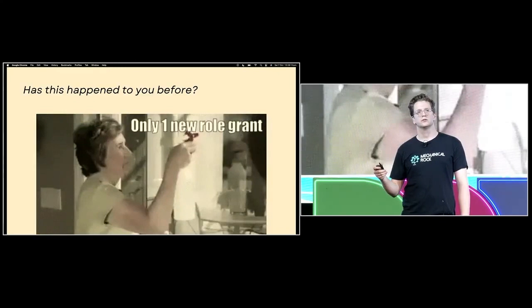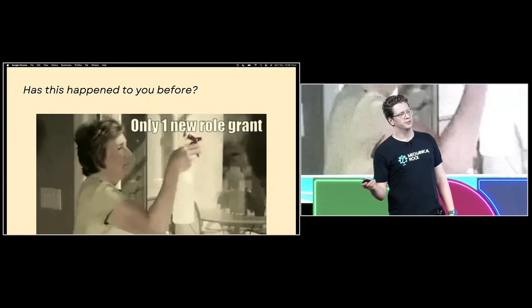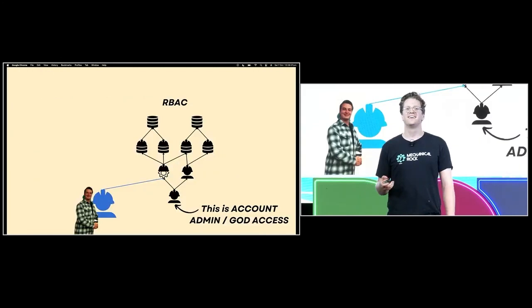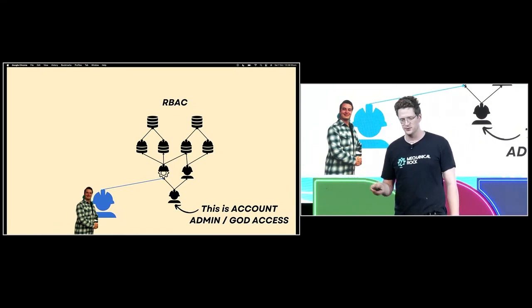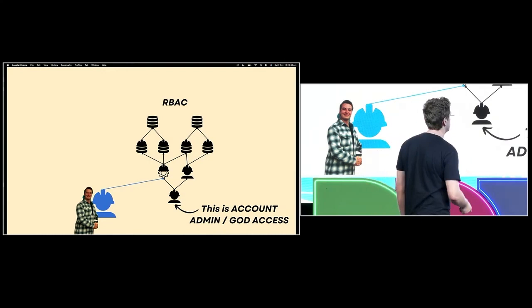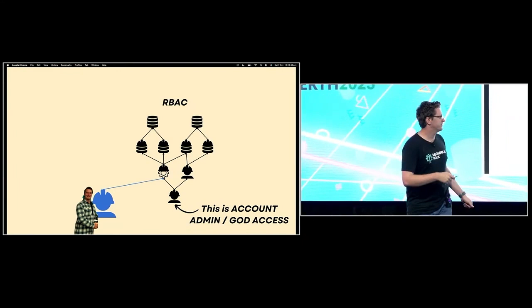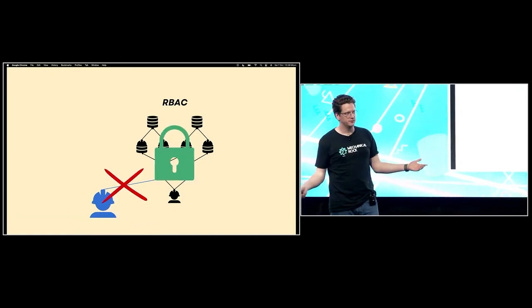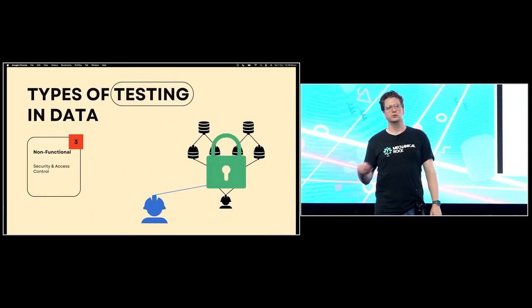Now non-functional testing. Has this ever happened to you? You make one change to your RBAC or your infrastructure, and people start losing access to reports — they can't assume roles. There's another use case: say you've got a malicious bad actor trying to grant himself elevated privileges in your data platform or RBAC through a PR, and he gets one of his mates to approve it. How do we stop this? One way is with non-functional testing. This can be used to test things like access patterns and PII masking.